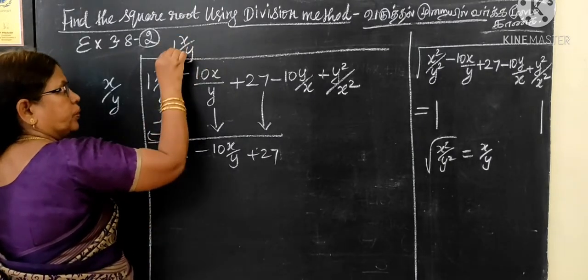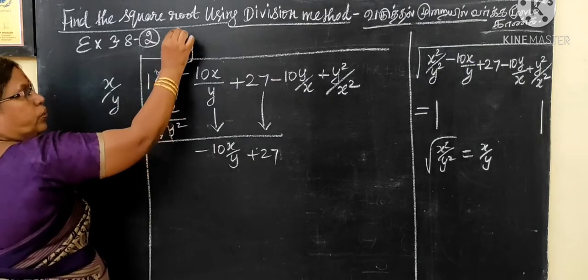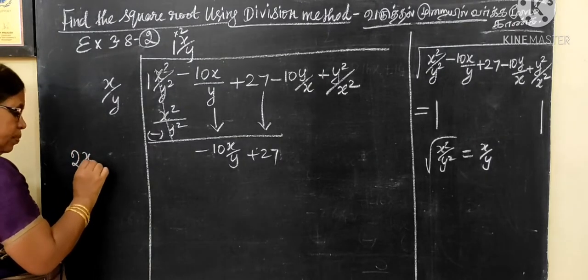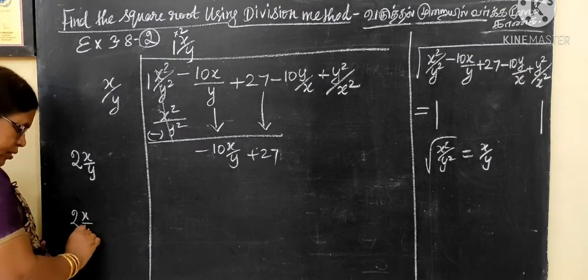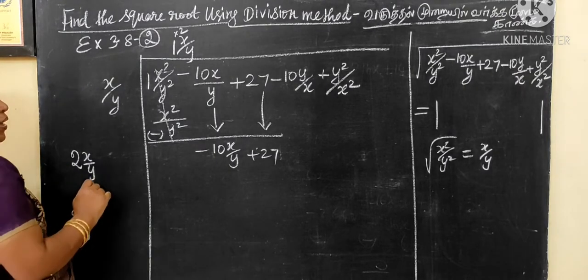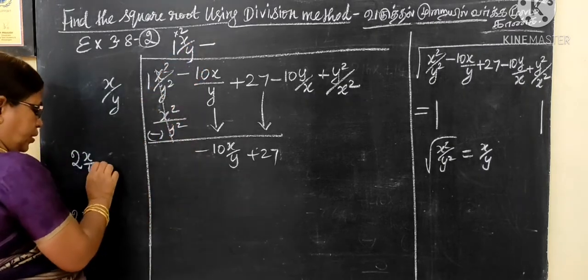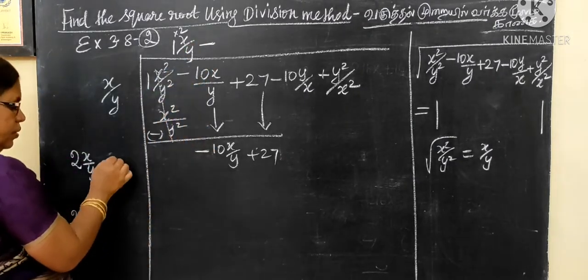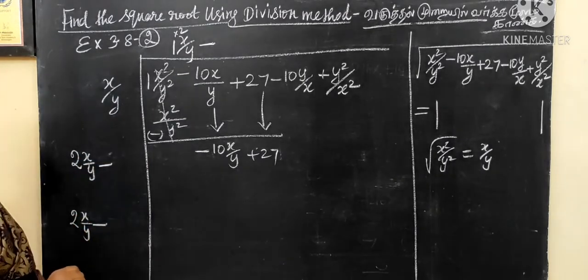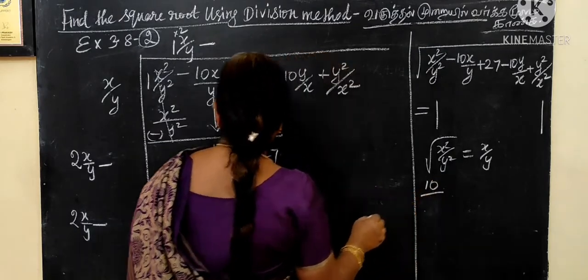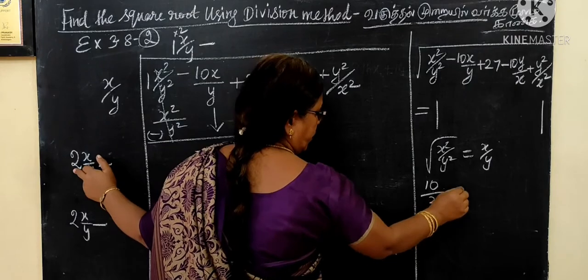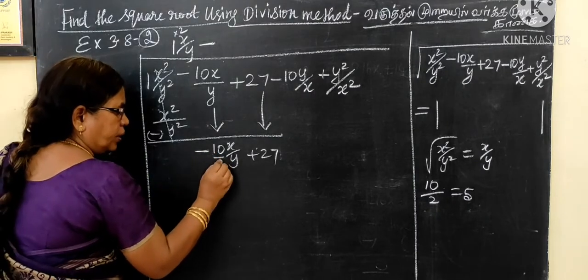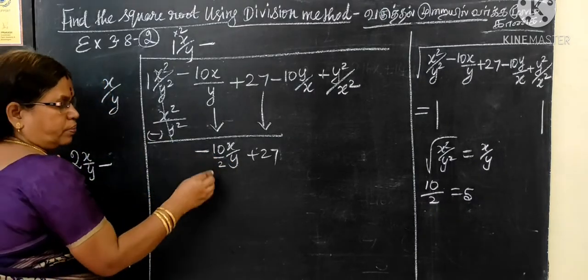If you have an equal value, what do you do? The quotient is 2x by y. Let's write this here. The second step is the same. I am going to bring this down. This will take 5. I will show you how much you can see here.